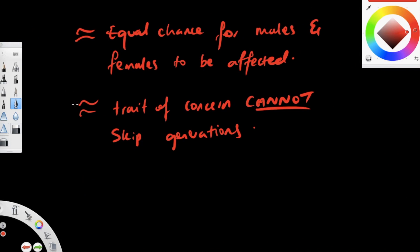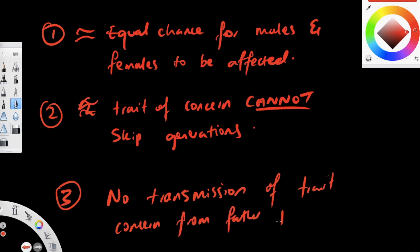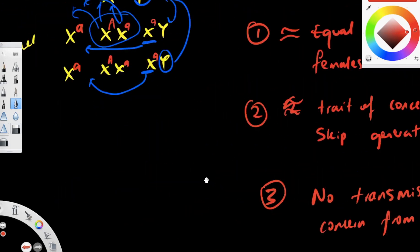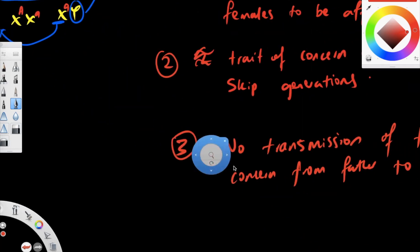So labeling what we've covered: criteria one, criteria two, and criteria three is that there is no transmission of the trait of concern from father to sons. If the mother is unaffected and the father is affected, you would see that no sons are affected but all daughters are affected — and this pattern would indicate X-linked dominant mode of inheritance.